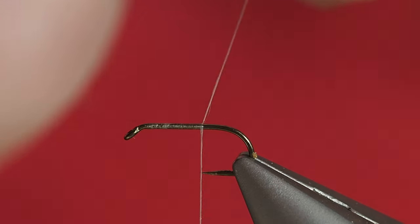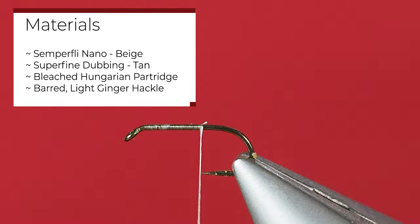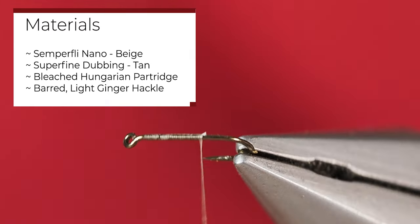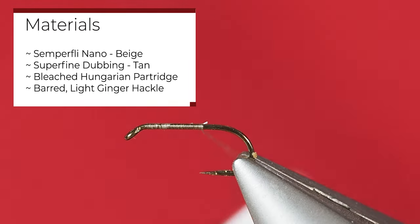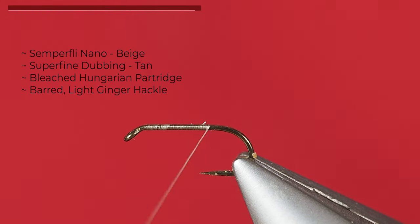I've got a size 16 hook here in my vise. I'm just going to use some beige nano silk, just happens to be what I have on hand. I'll tie the dries, the deer elk hair caddis.